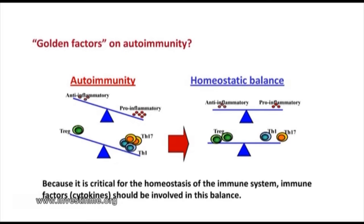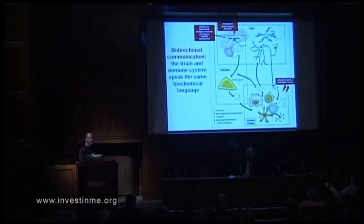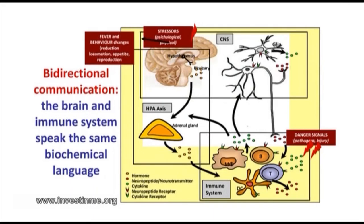It is obvious that because this is critical for the regulation of the immune system, immune factors — mainly cytokines — should be involved in this balance, and everybody is focusing on cytokines. We have pursued this, but following a different strategy. Our strategy is based on the concept that the brain and immune system communicate bidirectionally. Infection and inflammation in the periphery can affect behavior and fever, and conversely, physical and psychological stressors can affect the immune system.